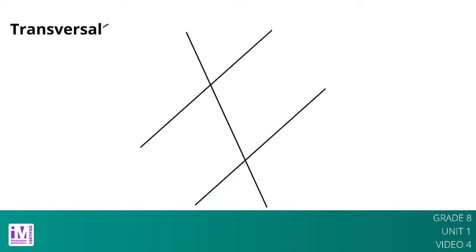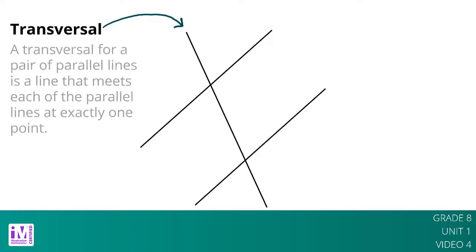When two parallel lines are cut by another line, we call the third line a transversal. A transversal for a pair of parallel lines is a line that meets each of the parallel lines in exactly one point.